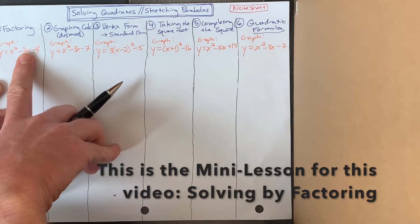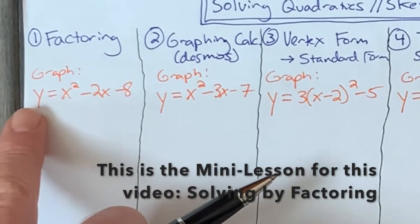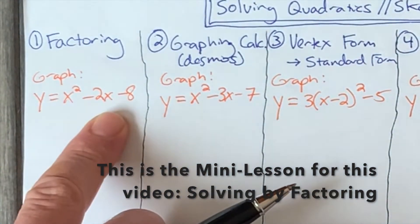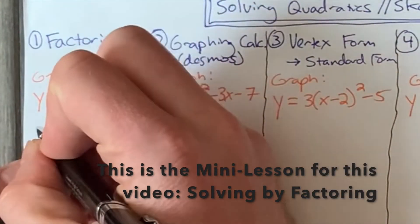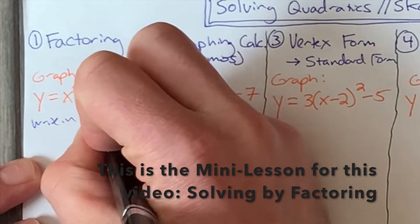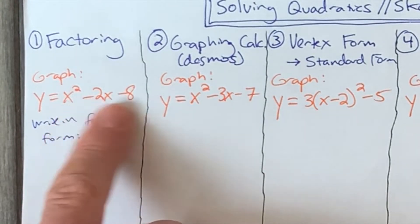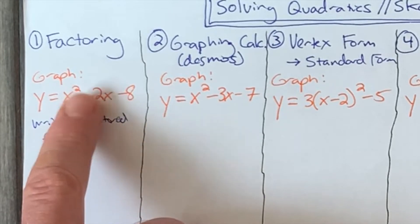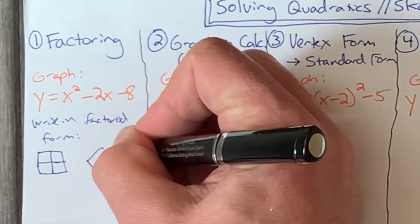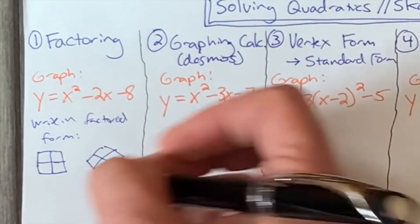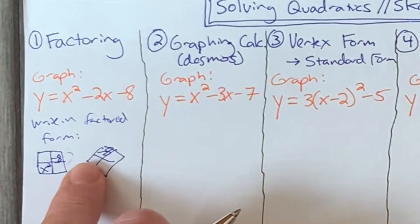Starting with number one: solving by factoring and then hopefully graphing from that. We have our equation here with no parentheses whatsoever, so we know it's written in standard form. Our goal here is to solve this one by factoring, which means we need to change this into factored form. I know in previous videos we talked about a shortcut — two numbers that multiply to negative eight and add to negative two — but let's do it the old-fashioned way using a rectangle and diamond problem. I'm going to put x squared here and negative eight up top.